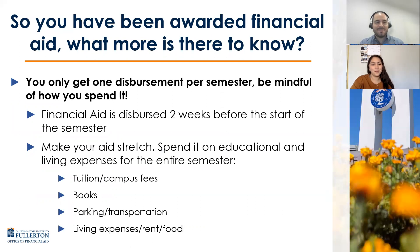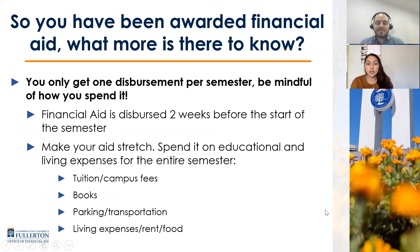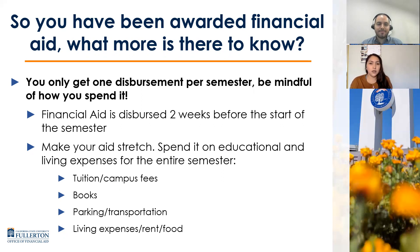Now that you have your financial aid, what is there to know? Here at Cal State Fullerton, there is only one disbursement each semester, about two weeks before the beginning of each semester — unlike some community colleges that have two disbursements. It's really important that once your financial aid disburses and helps pay for your tuition, fees, or other costs, any remaining funds left over need to be stretched out across the semester. With that leftover money, you want to help pay for necessities like books, parking and transportation, and other living expenses like rent or food.